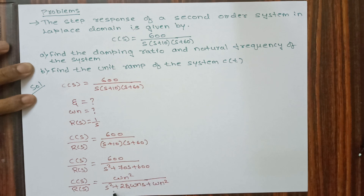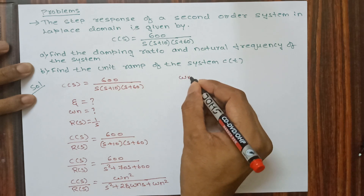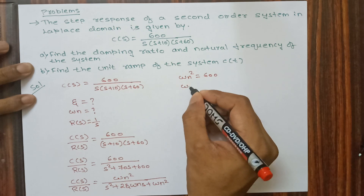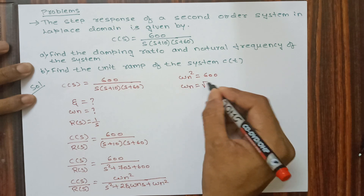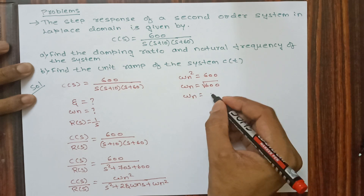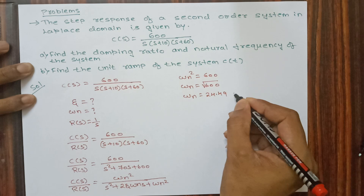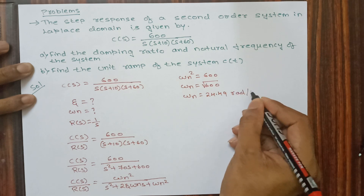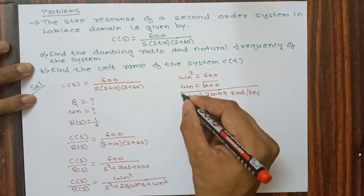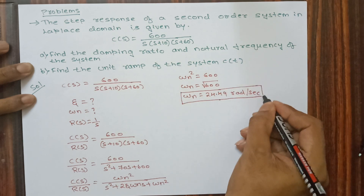By comparing the denominator of the given transfer function with the standard form, we get omega_n² = 600. Therefore the natural frequency omega_n = √600 = 24.49 radians per second. This is the solution for natural frequency omega_n.